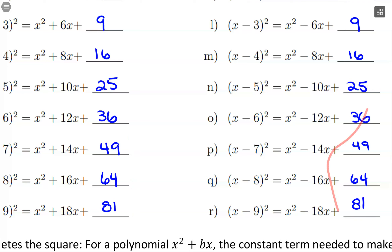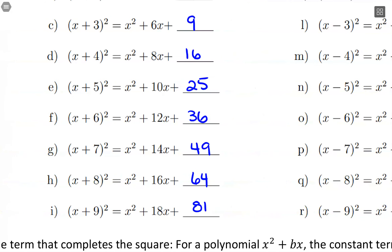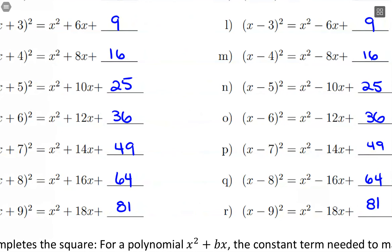In terms of the value we're adding on at the end, it's completely the same — doesn't matter positive or negative. Where we do see a difference is that in the expanded form, we have subtraction with that middle term when it's subtraction, whereas if it's addition, we see addition. So there's going to be this connection with signs: positive-positive, or negative-negative.